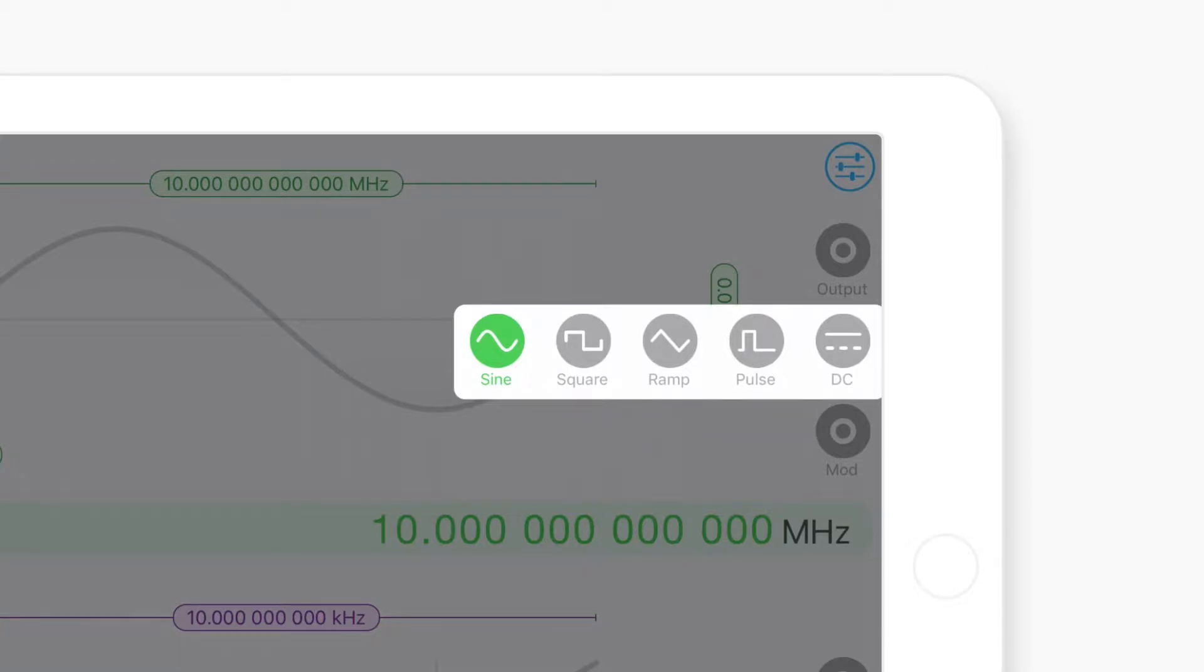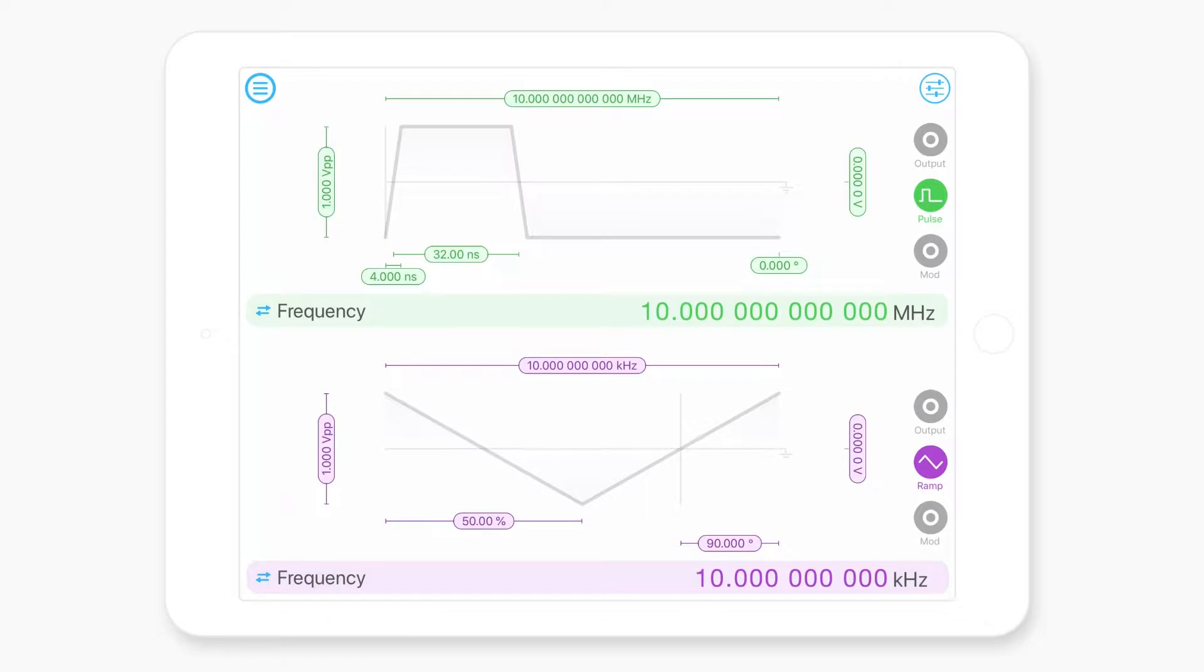So if we wanted to generate a pulse wave, what that'll do is actually change the little illustration on the left and bring up a couple of new parameters for us to tune which is edge time and the pulse width.